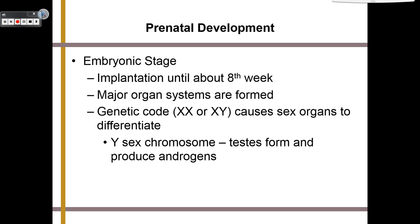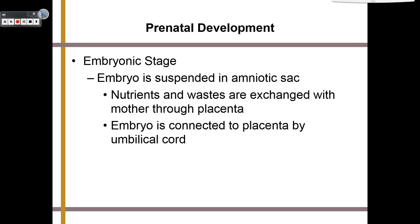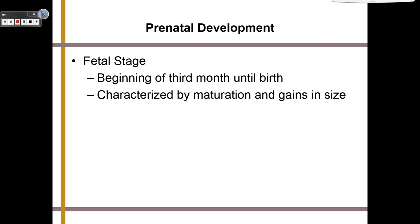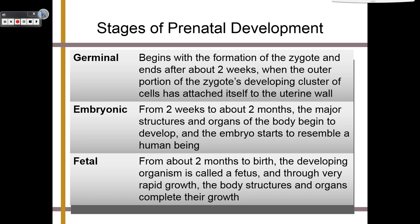Within the embryonic stage, the embryo is suspended in an amniotic sac. Nutrients and wastes are exchanged with the mother through the placenta, and the embryo is connected to the placenta by an umbilical cord. From the embryonic stage, we enter the fetal stage — the beginning of the third month until birth — characterized by maturation and gains in size. So again, we have the germinal stage, the embryonic stage, and the fetal stage of prenatal development.